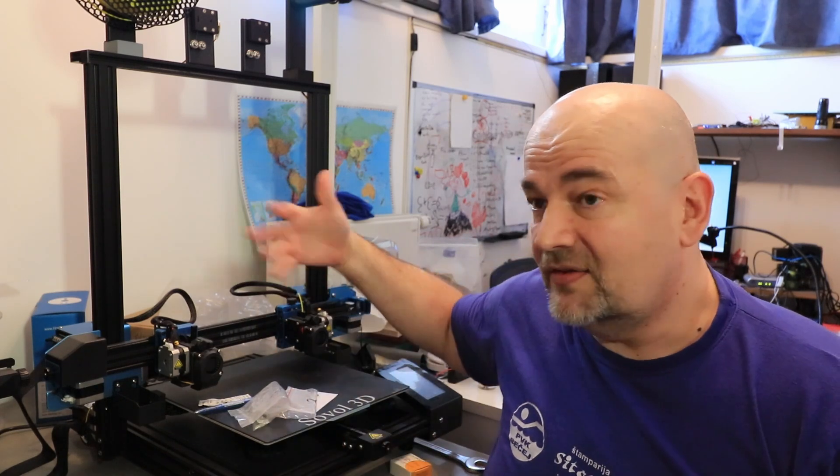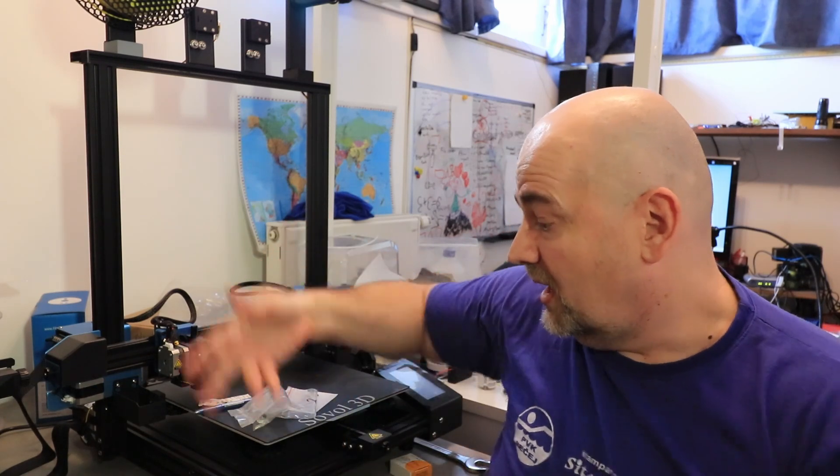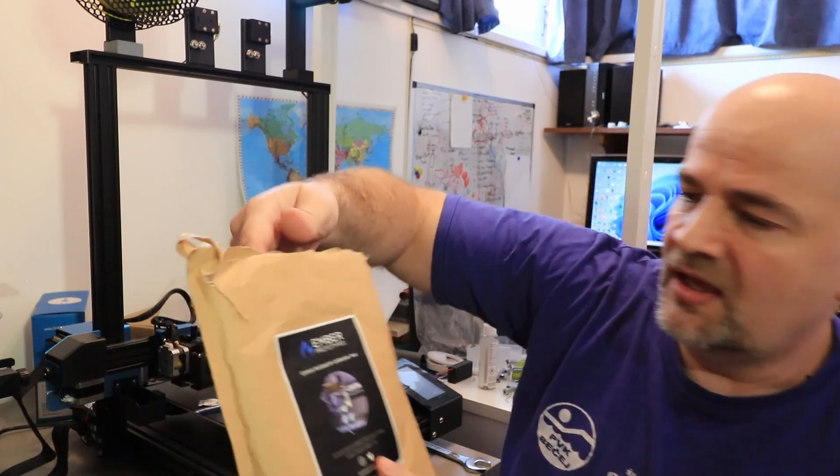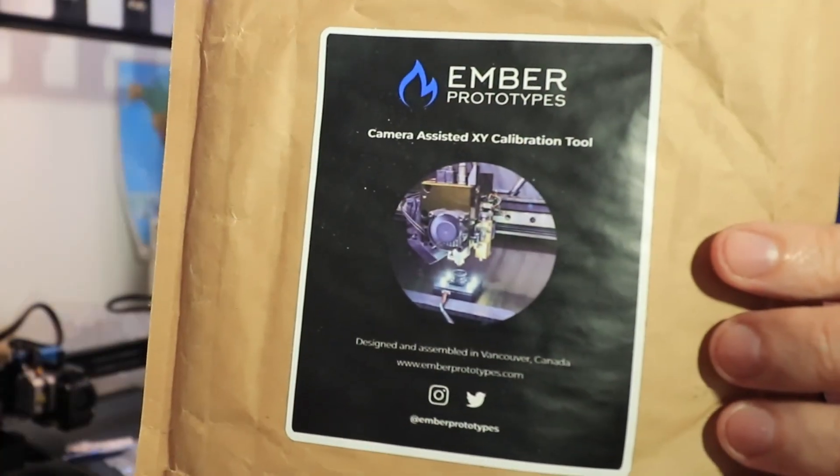I have a feeling for smaller parts the SV-04 may be even faster. It is very important to calibrate in X, Y, and Z direction these two extruders, and actually for this I just got this package from Amber Prototypes. It says Camera Assisted XY Calibration Tool.